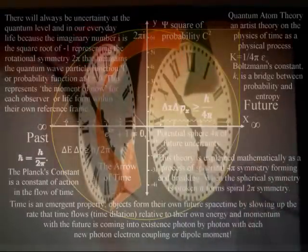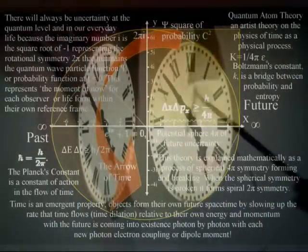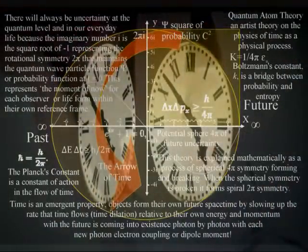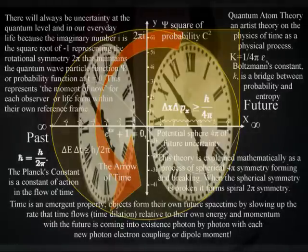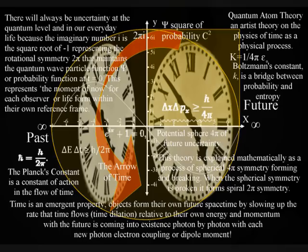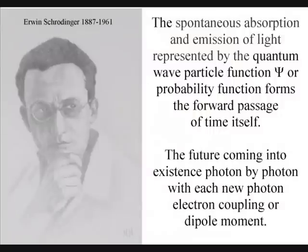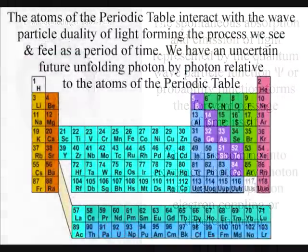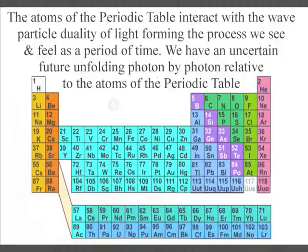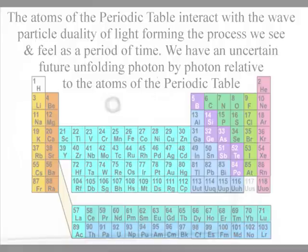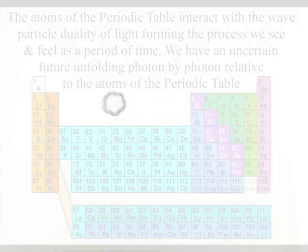From the centre of our own reference frame we comprehend this process of continuous energy exchange that forms the ever-changing world of our everyday life as time, with a past that is gone forever and an uncertain future that only exists as a probability wave function. The future is unfolding photon by photon relative to the atoms of the periodic table forming what we see and feel as a period of time.